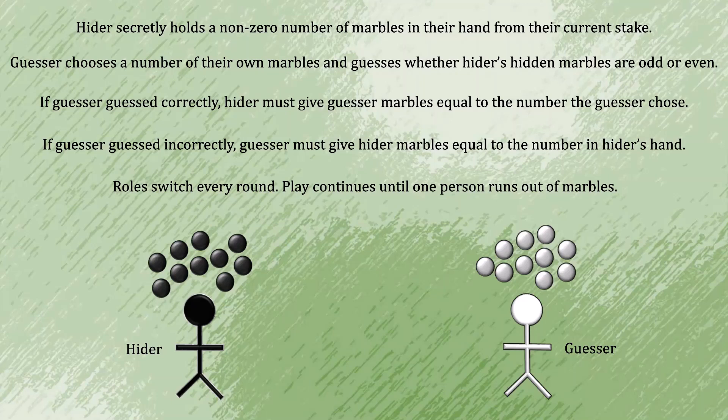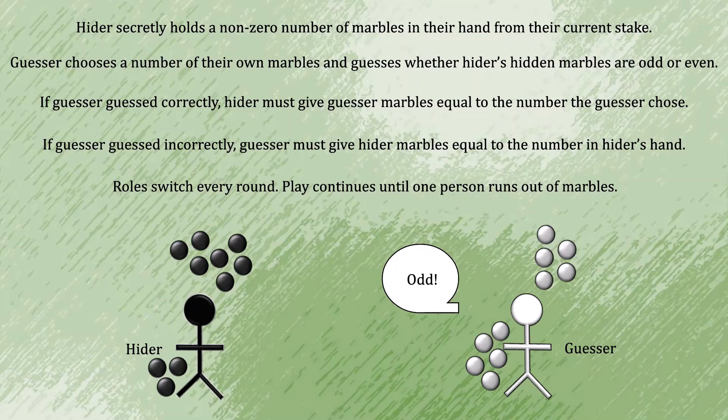To illustrate how one of these rounds might play out, the hider begins by secretly placing some number of marbles in their hand. We'll call it three. The guesser then puts some number of marbles in their hand, perhaps five, and guesses odd or even. If they were to guess odd here, then they would win because the hider has three marbles. That's an odd number. And by the rules of the game, the hider must give the guesser a number of marbles equal to what the guesser had, which in that case is five.